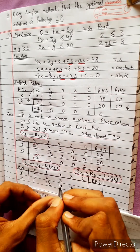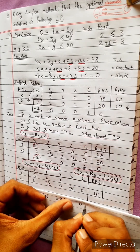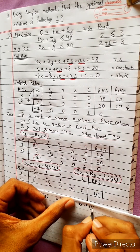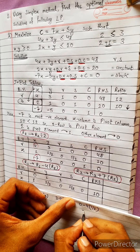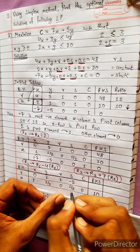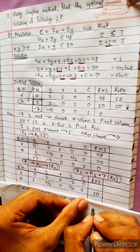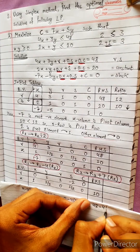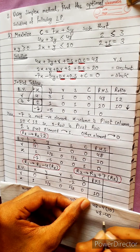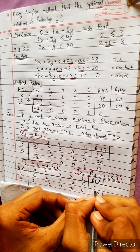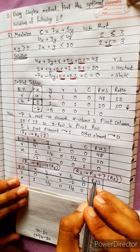R1 minus 4 times R2: 1 by 2. This cancels to minus 2. R1 minus 4 times R2: R2 is 10. 48 minus 40 is 8. R3 plus 7 times R2.